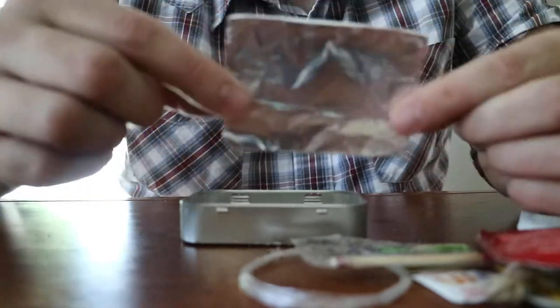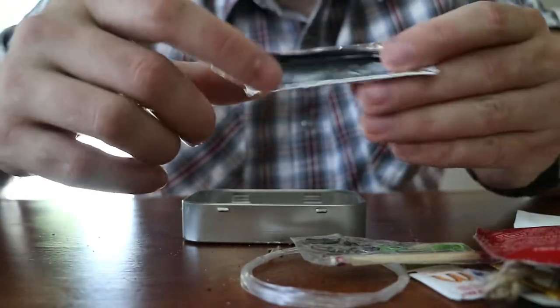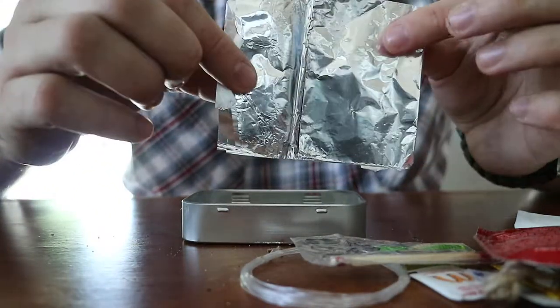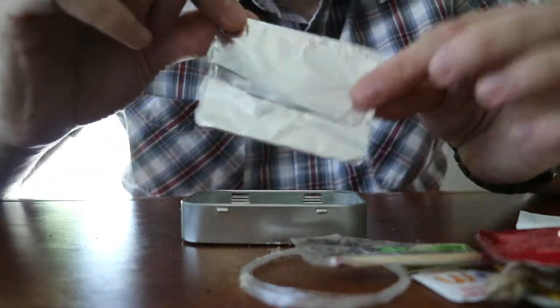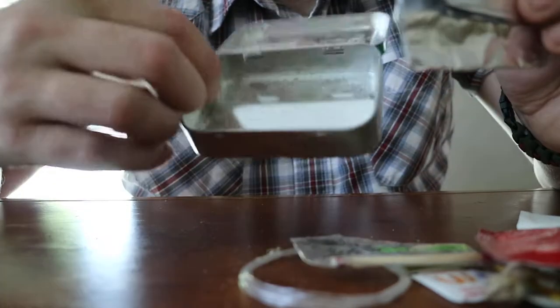Another really important item in here, tin foil. Alright, it's got a shiny and a dull side. You can use the shiny side to signal for help. You can form this into a little pot to boil water with, or you can use the tin itself.